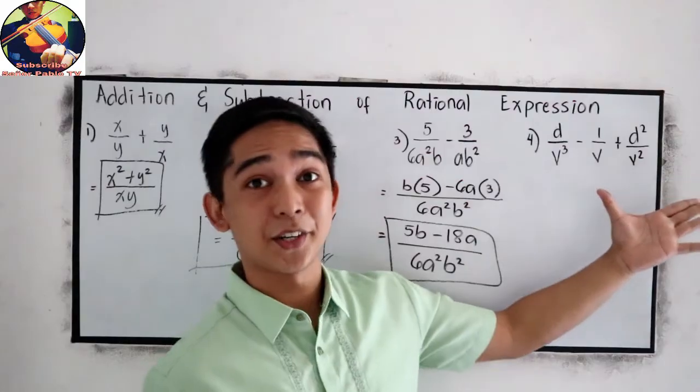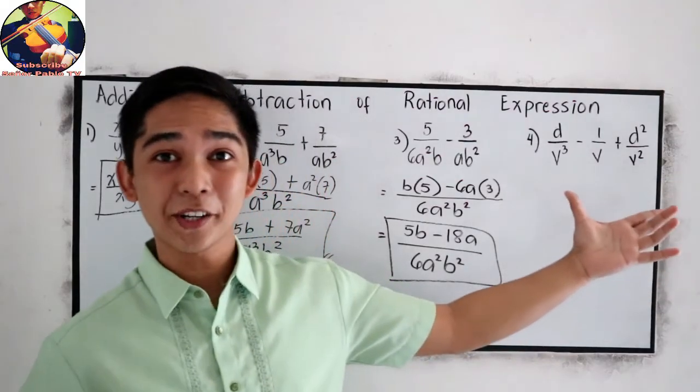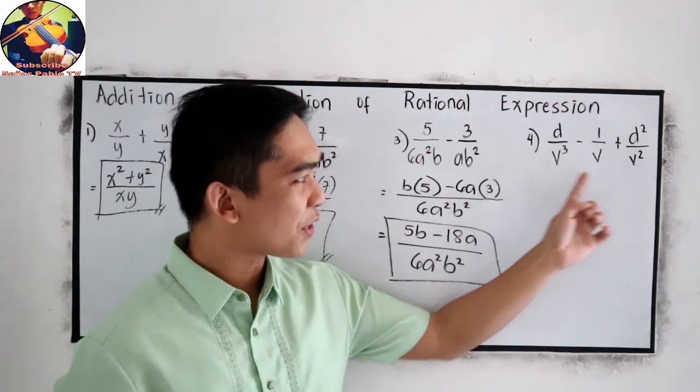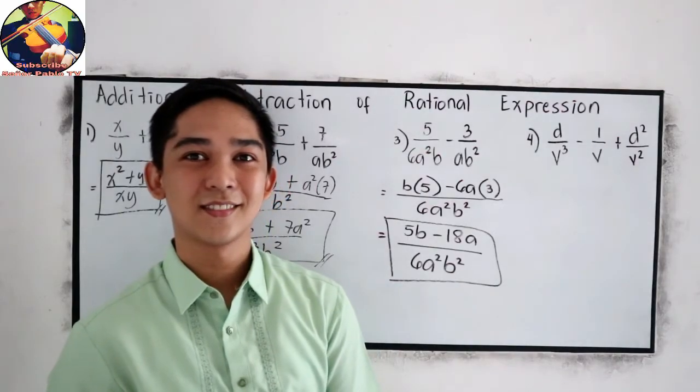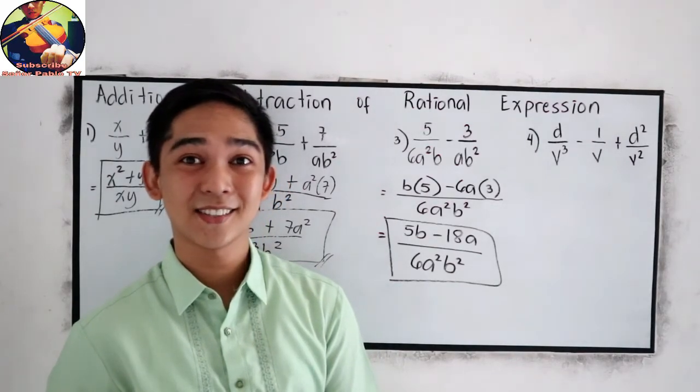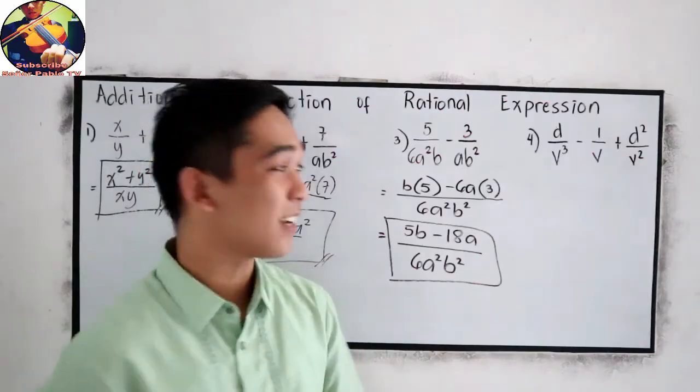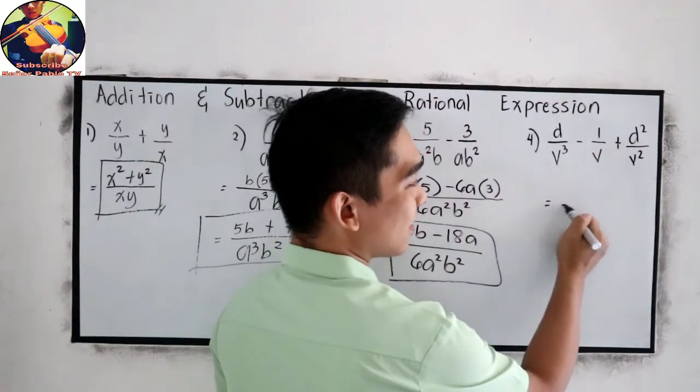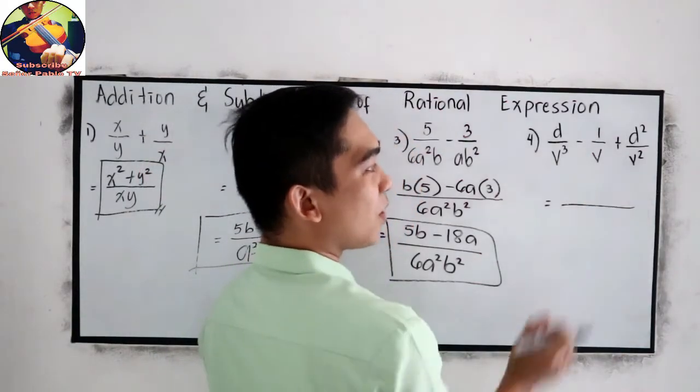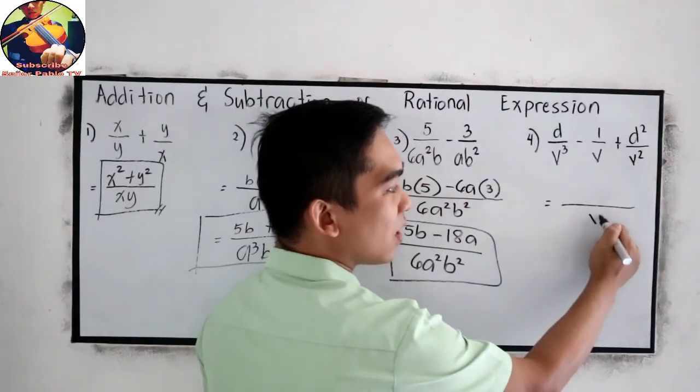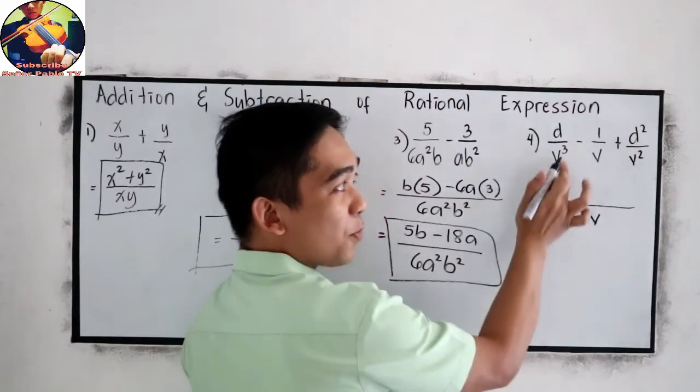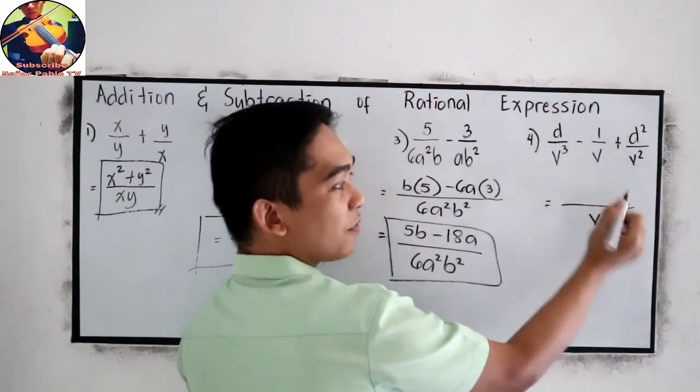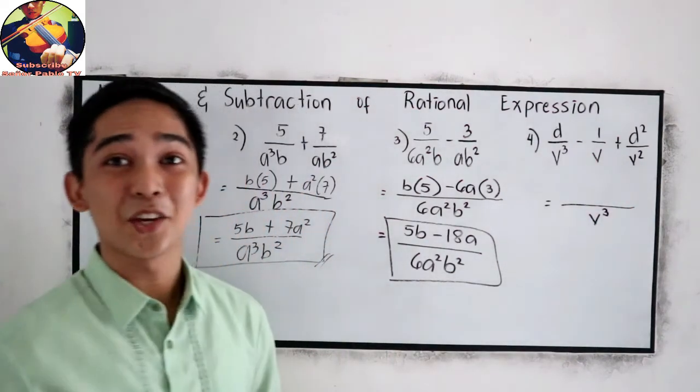Number 4. Are we done with number 4? So, we have 3 terms. Our LCD is? Our technique. Since this is a single variable, copy the variable, then find the highest exponent. In this case, we have 3. So, v cubed.